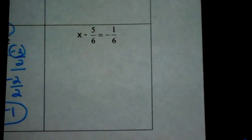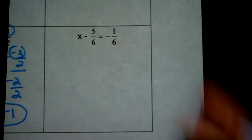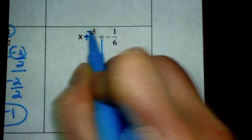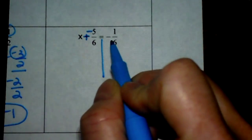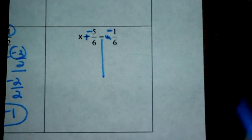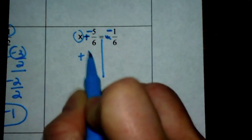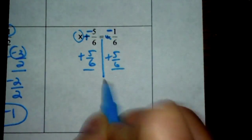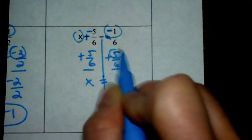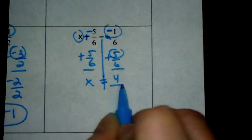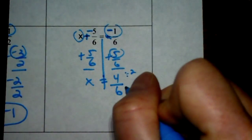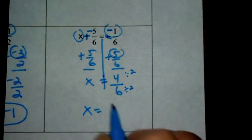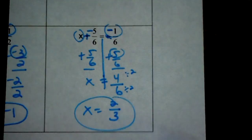Last fraction problem. Draw the line and change the sign — remember with fractions, we put that sign with the numerator. I'm adding a negative 5 sixths to x. To cancel out a negative 5 sixths that's being added, we add a positive 5 sixths. So x equals: add the numerators — negative 1 plus 5 is 4 — bring over the denominator of 6. There is a number that goes into 4 and 6, which is 2. Yes, you have to simplify: 4 divided by 2 is 2, 6 divided by 2 is 3. x equals 2 thirds.